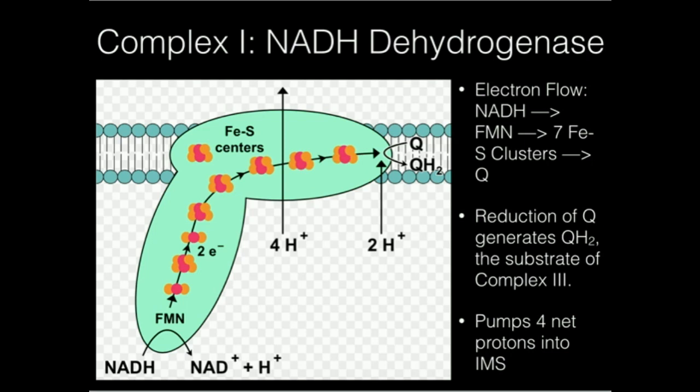In this video we're going to go over the function of complexes 1 and 2 in the mitochondrial respiratory chain. The commonality between these two enzyme complexes is that they're both going to contribute to the ubiquinol pool. The ultimate goal of complexes 1 and 2 is to generate reduced coenzyme Q, also called ubiquinol.